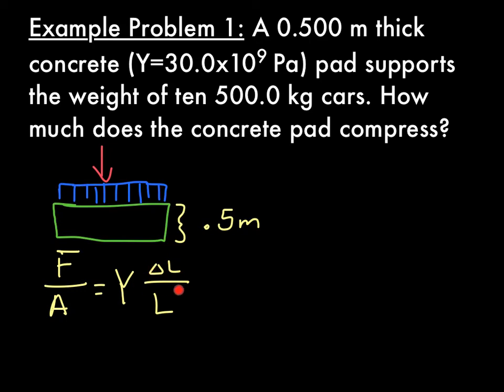And more particularly, we want to solve for the change in length. So let's rearrange the equation, and we'll get delta L equals F L over Y A. We're going to plug in our values to solve for delta L. So this is the force of 10 cars, that's G, that weigh 500 kilograms.